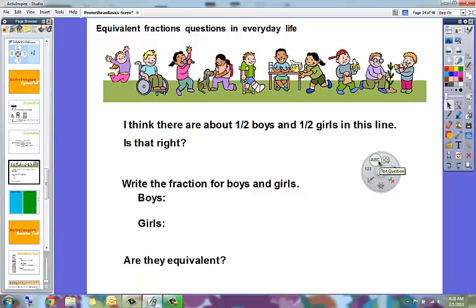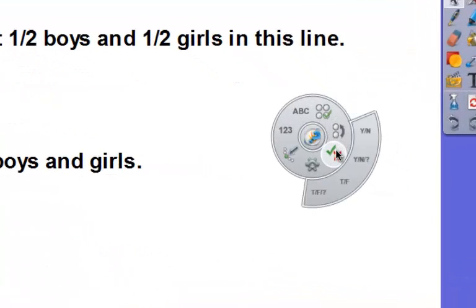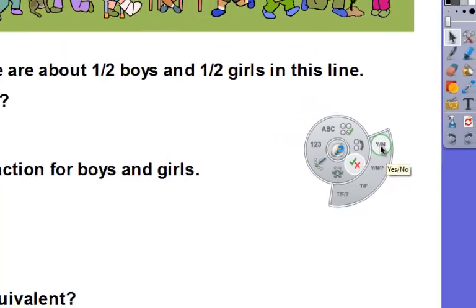Let's say I'm asking them the first question: I think there are about half boys and half girls in this line, is that right? So that response would be a yes or a no question. So I can have the students answer true, false, or don't know, or yes, no, or don't know. I'm going to do yes, no.